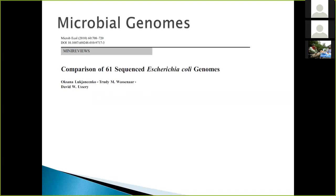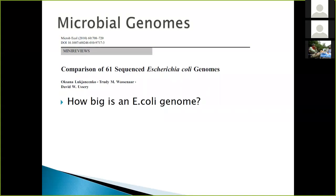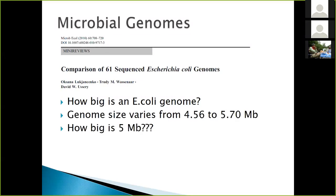Back in 2010, there was a nice paper that looked at 61 sequenced E. coli genomes. Back seven years ago there weren't as many as there are now — with the AMD Project there are thousands. They looked at 61 that were in the publicly available database and wanted to do some comparative analysis. The genome size of E. coli, across different strains, can range from 4.56 to about 5.7 million bases.